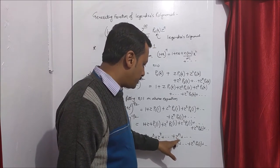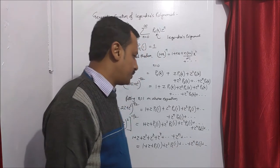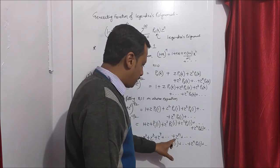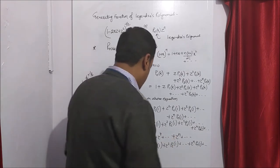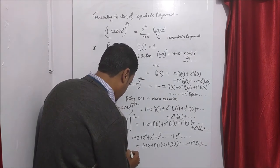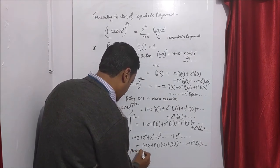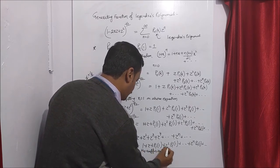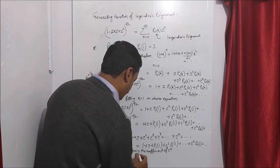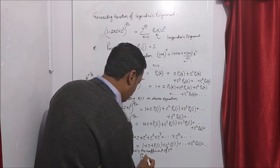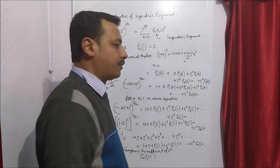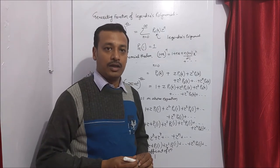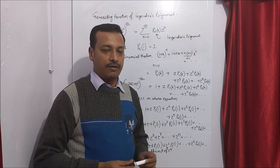The coefficient of z to the power n on the LHS is 1, and on the RHS the coefficient of z to the power n is Pn(1). Comparing coefficients of z to the power n, we get Pn(1) is equal to 1. This is what we wanted to prove. Using the generating function and binomial theorem, we easily derived this result.